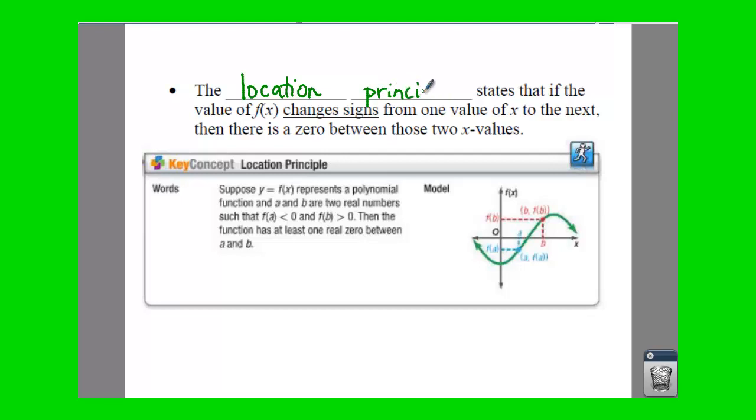The location principle states that if your value of f(x) changes, which is just your y, if your value of y changes signs from one value of x to the next, then there's a zero between those two values.